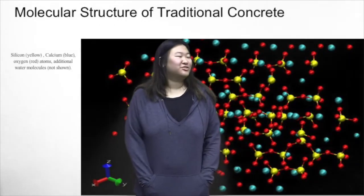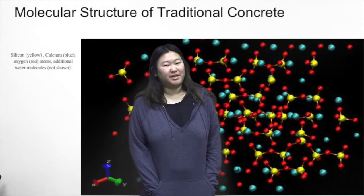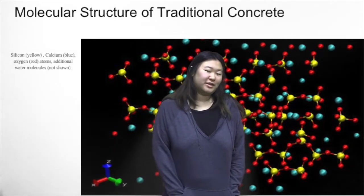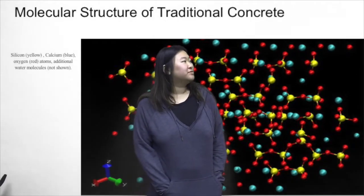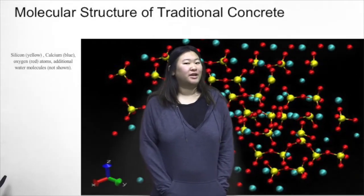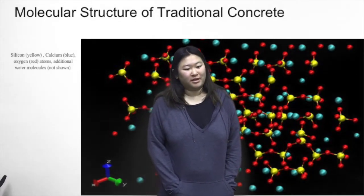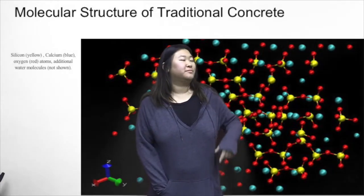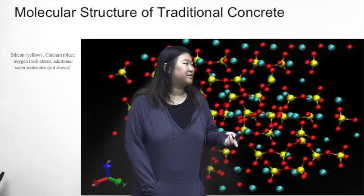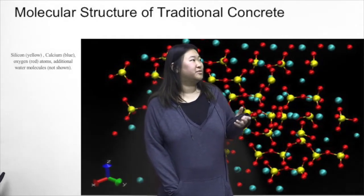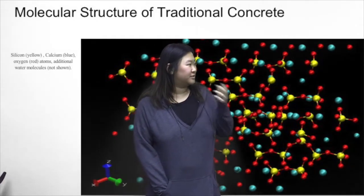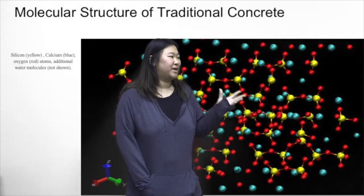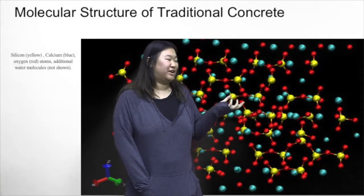Here we have the molecular structure of traditional concrete, which is made up of silica, calcium, oxygen, and some water molecules. The calcium generally comes from the limestone mixed into the cement, as does the silica. The water is mixed so that it reacts with the clinker inside the cement — generally gypsum, iron oxide, and different silicas — which starts to heat up and cure the concrete, forming a paste that eventually hardens and binds the aggregates together.